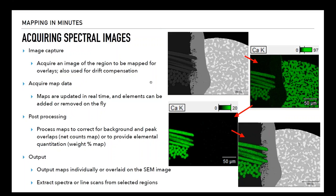Because we have the entire spectrum to work with, we can do post-processing which corrects for peak overlaps and background subtraction — getting rid of peak overlap errors — and we get a nice clean calcium map. This can be converted into net counts, which is a subtraction of overlaps and backgrounds, or quantitated to provide a weight percent map showing distributions, gradients, and concentration. Output options include overlaying maps individually onto the same image, outputting with a black background, and doing further work such as extracting spectra or line scans from selected regions.